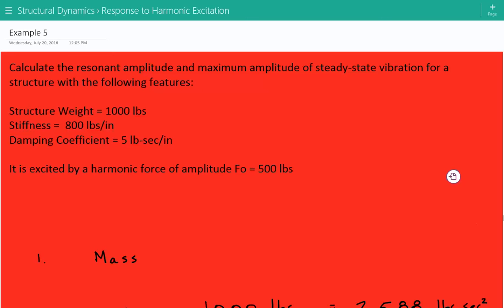The problem asks us to calculate the resonant amplitude and maximum amplitude of steady-state vibration for a structure with the following features: structure weight equals 1,000 pounds, stiffness equals 800 pounds per inch, damping coefficient equals 5 pounds second per inch, and it's excited by a harmonic force of amplitude F₀ equal to 500 pounds.